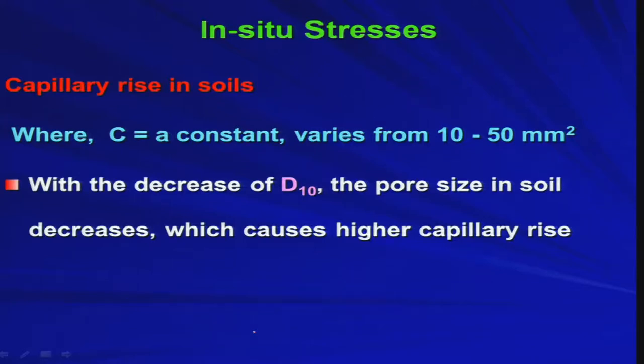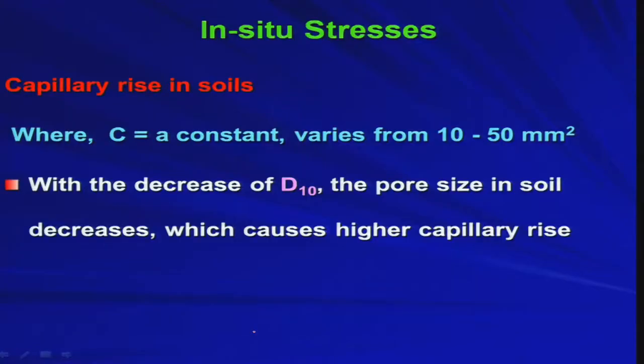With the decrease of D10, the pore size in soil decreases. If D10 decreases, pore size decreases, which causes higher capillary rise — because the lower the pore size, the higher the capillary rise, consistent with h_c proportional to 1/d. Conversely, if D10 increases, pore size increases and capillary rise decreases.